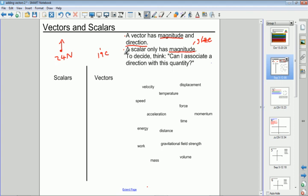And if you don't know whether a quantity is a scalar or a vector, just ask yourself this question: can I associate a direction with this quantity? Is there a direction in which it acts? And if you can think of one, then it's probably going to be a vector.